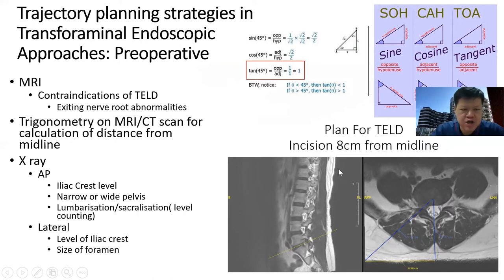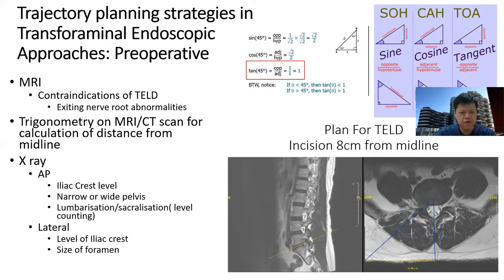We first analyze patients who have L5S1 prolapsed disc on MRI and look for any contraindication for the transforaminal approach, such as exiting root abnormality. Using trigonometry — especially the tangent — to calculate the distance from the midline for the approach. Using the AP and lateral views, we look out for the iliac crest level, pelvis size, and whether there is four-level counting, lumbarization, or sacralization. On the lateral view, we also look at the size of the foramen and the level of the iliac crest. I used trigonometry and calculated by ACM for the case I'm going to present later.